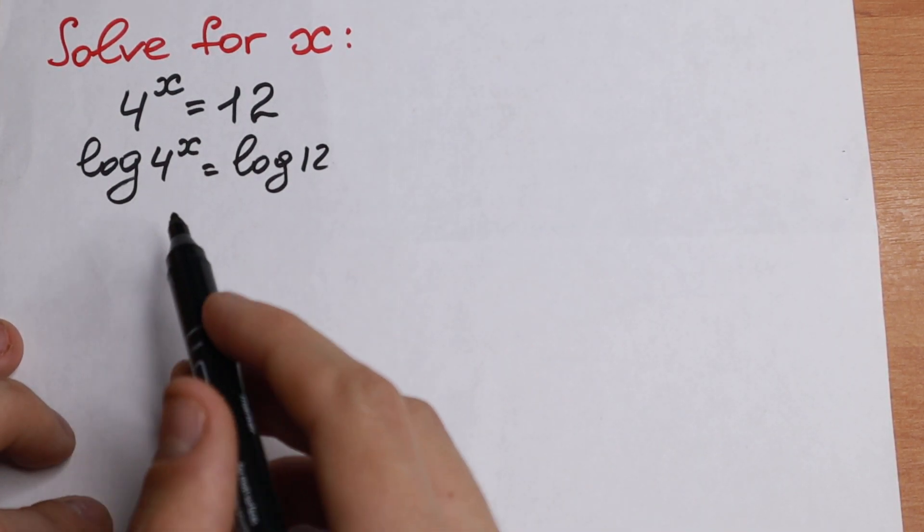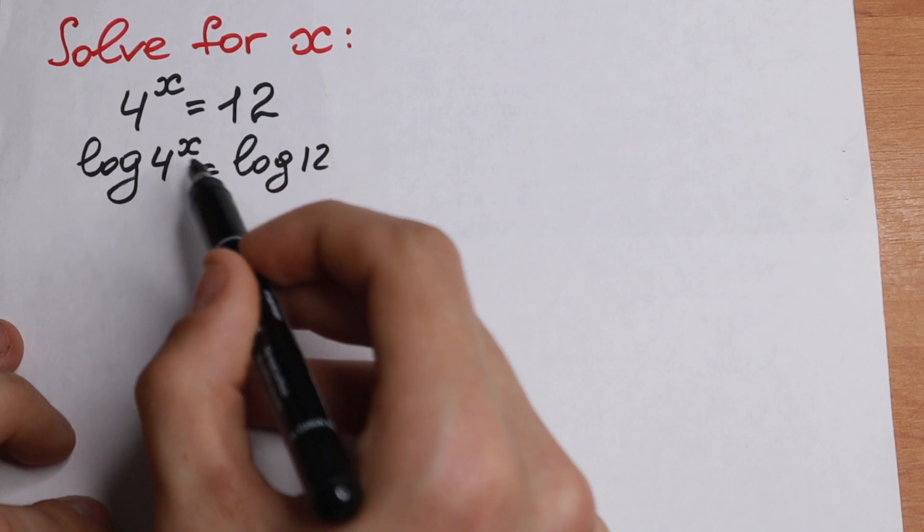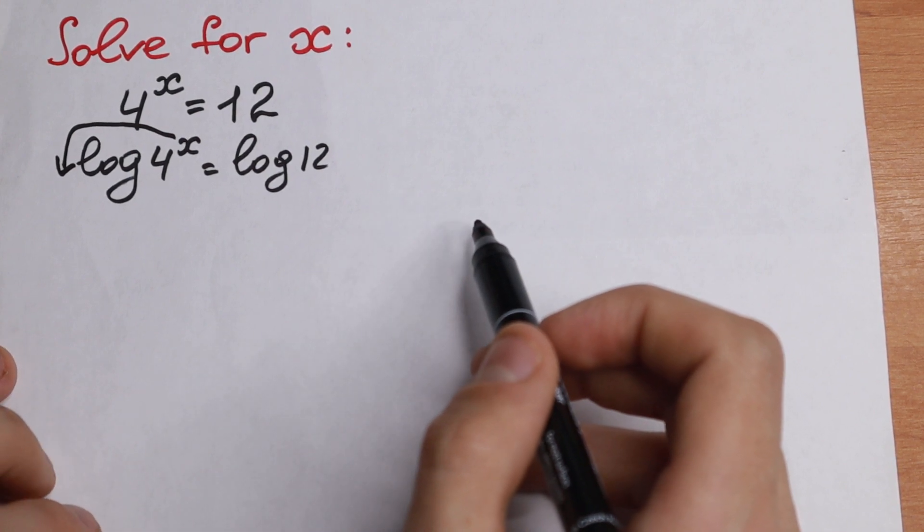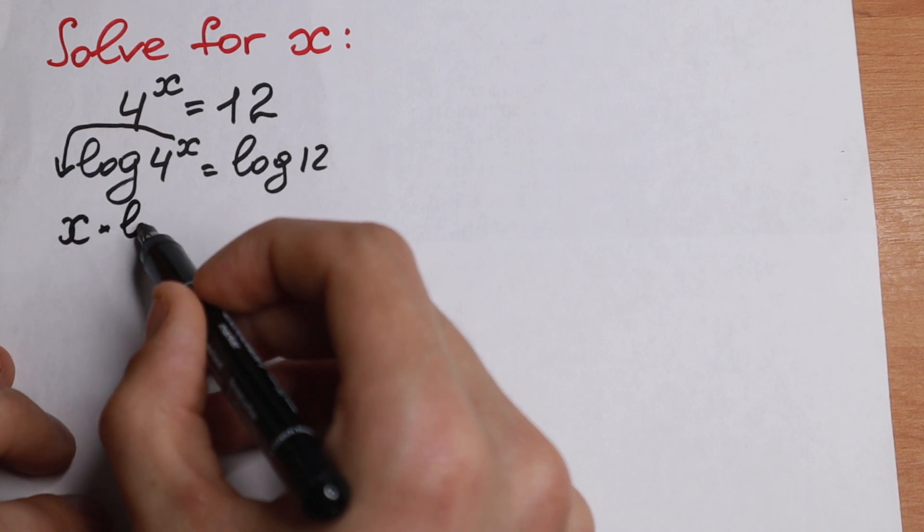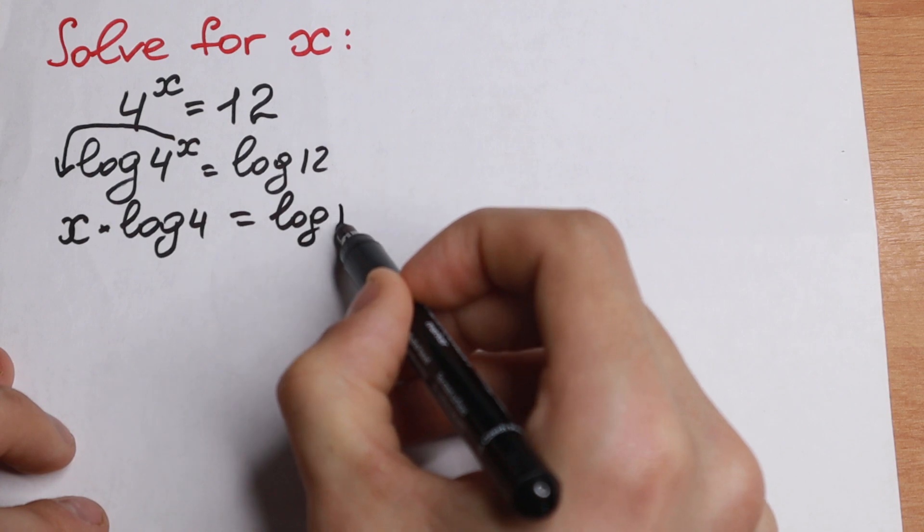We know the rule: if we have log a to the power x, in our case, this x jumps right here in the beginning. This is a log property, the main log property. We will have x times log 4 equal to log 12.